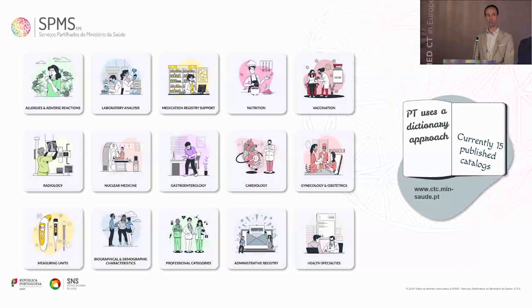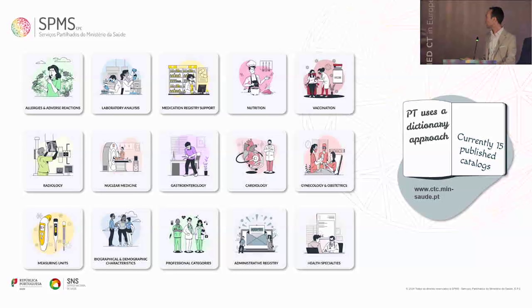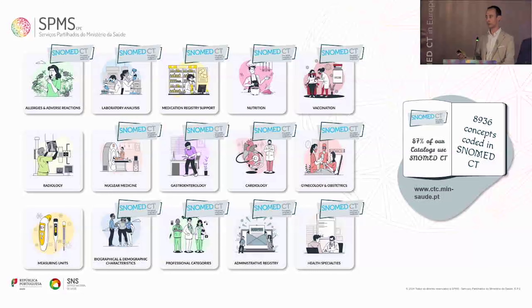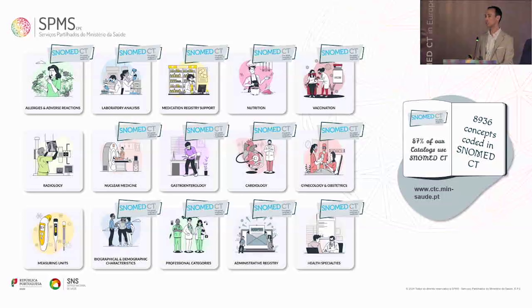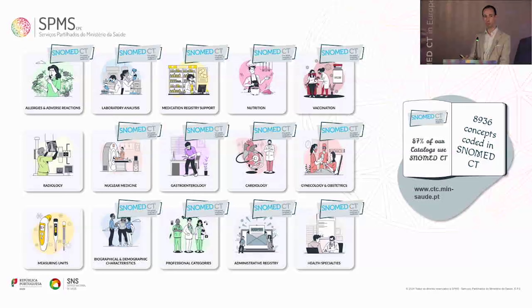SNOMED is a very big part of this. We operate under a dictionary approach — we provide dictionaries and value sets along with these services, and as part of our compliance check we make sure people are using them appropriately. Right now 87% of our dictionaries use SNOMED, and this number will increase because when we launch the newer version of the radiology catalog, we will be launching it with SNOMED. SNOMED plays a big part in managing the ecosystem — value sets are important not only for clinical purposes but also for providing structured data to manage everything. For instance, the type of appointment you set up is coded in SNOMED.